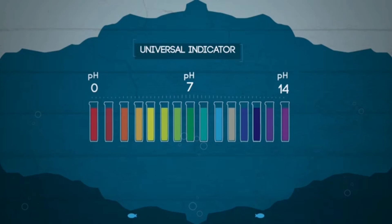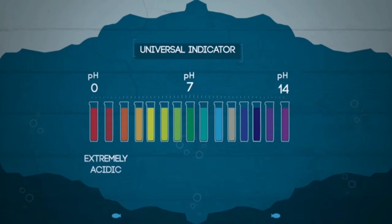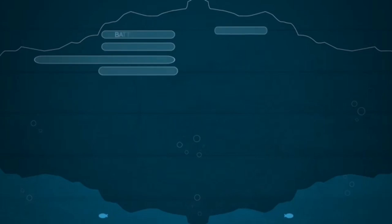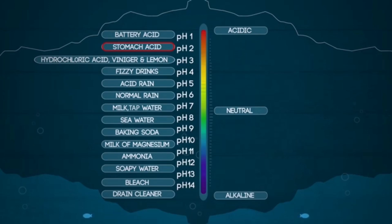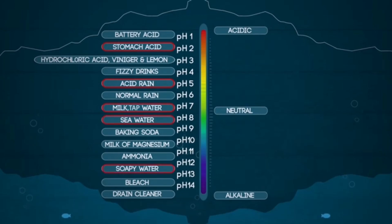The pH scale runs from 0 to 14, with 0 being extremely acidic, 7 being neutral, and 14 being extremely alkaline. Stomach acid is a strong acid with a pH of about 2. Acid rain has a pH of about 5.5. Milk is slightly acidic or close to neutral at around 7. Sea water is slightly alkaline, soapy water is a strong alkali, and bleach is a very strong alkali with a pH of 13.